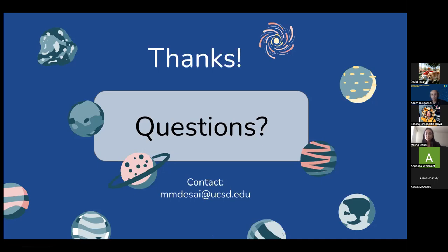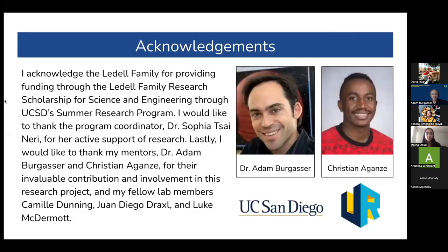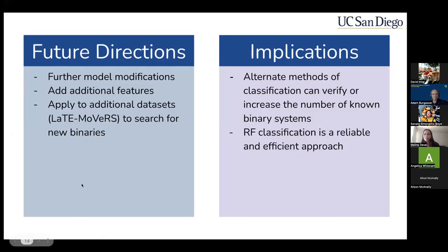We have one more question in the chat. Tatiana asks, where would you like to move next with your findings? We do want to do a second phase to this project, which is having the random forest model identify unseen data as single or binary. Currently, all I've been doing is inputting data that I know is a single or a binary and the random forest classifies them. We want to input new data that it hasn't seen before and have it classify as a single or a binary for us — actually discovering hopefully some new binaries using a late movers data set.